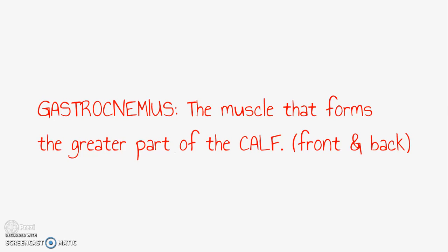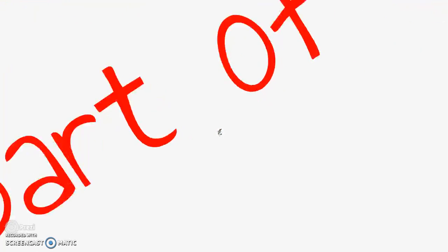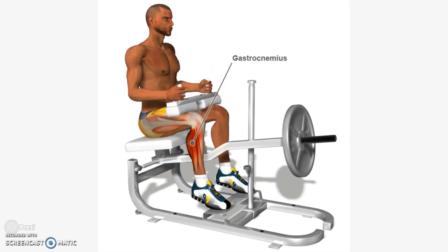The last muscle is called the gastrocnemius. This is the muscle that forms the majority of your calf. It can be seen from the front and back view. Anytime you need to push off your toes, you are engaging the gastrocnemius muscle. Jumping is one example. A ballerina would also need a strong gastrocnemius muscle. The seated calf raise is one way to work your gastrocnemius. You can also do toe raises standing on a stair to really work them. If those are too easy, try doing them one foot at a time.